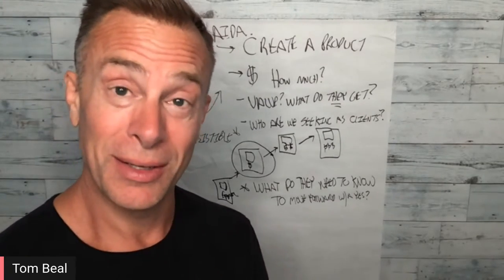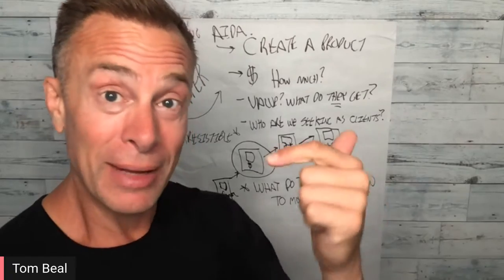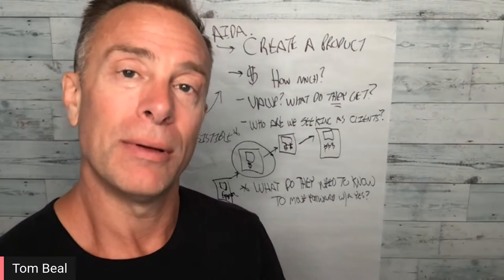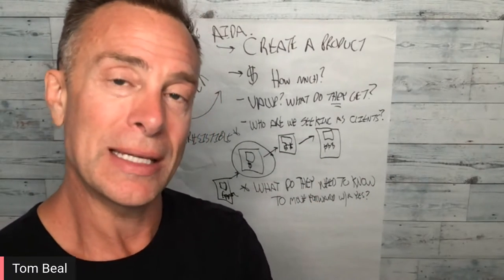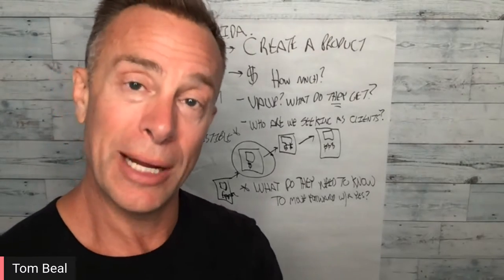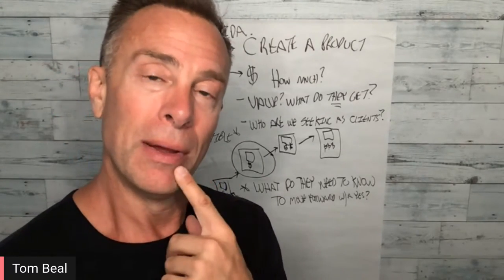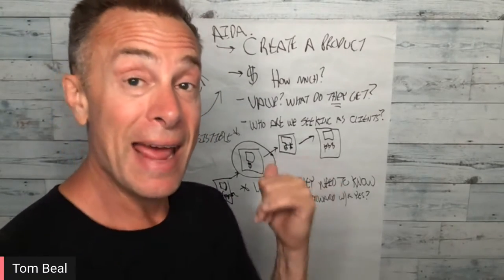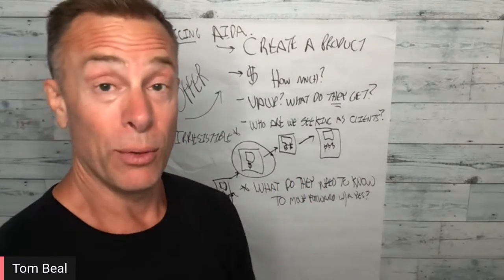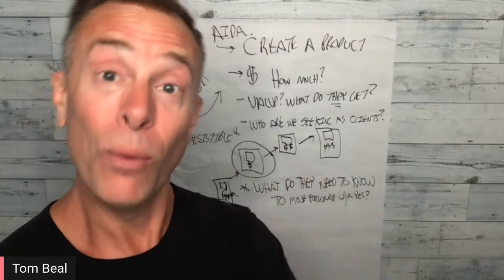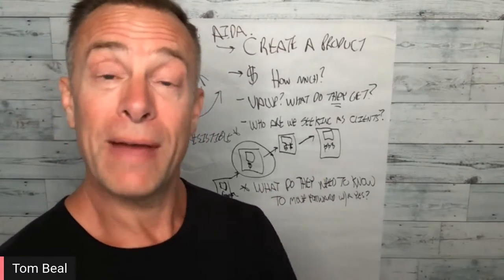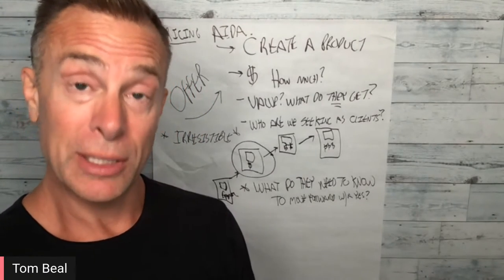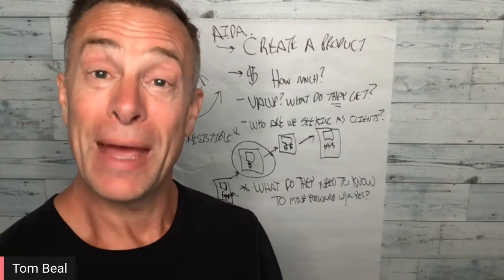Then the next part: Interest — keeping the attention. What are you going to do to keep their interest? Desire — adding curiosity so they say 'I want more of this, I'm digging what's being said here, I'm having these problems and I'd like the solutions.' And then the A — Action — that's where they pull out the credit card and say yes, using scarcity and all the different tools of influence at your disposal. So I've talked a little about what goes into the process prior to jumping into GrooveSell and GroovePages.